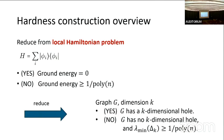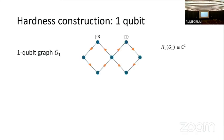I'd like to tell you about the hardness construction — how do we show this thing is QMA-hard? We reduce from the local Hamiltonian problem, specifically from a version where we have a sum of projectors onto rank-one states. In the yes case the ground energy is zero, in the no case it's one over poly. From the reduction we get a graph and a dimension such that if the original Hamiltonian had a zero eigenvalue then the graph has a k-dimensional hole, and if the ground energy was bigger than one over poly then the Laplacian has energy bigger than one over poly.